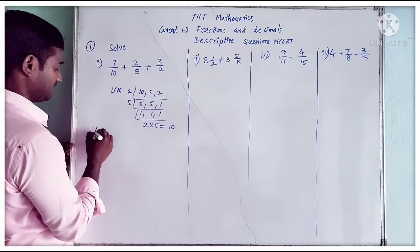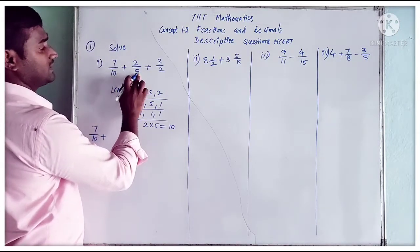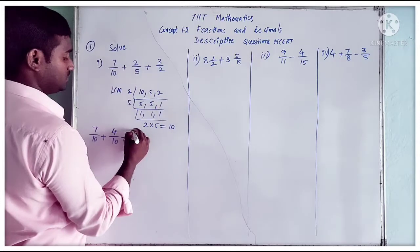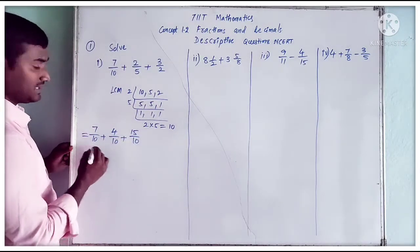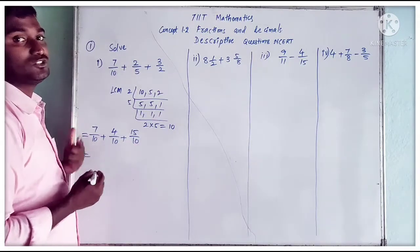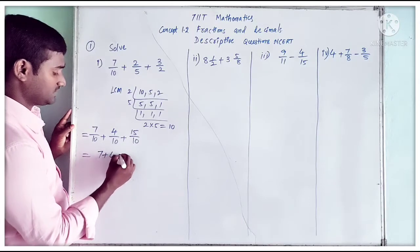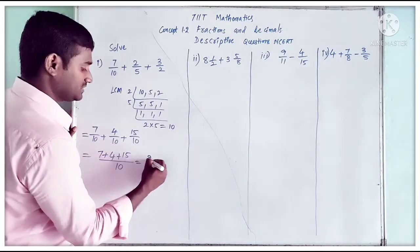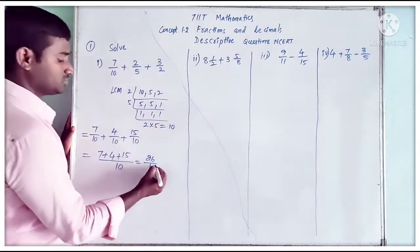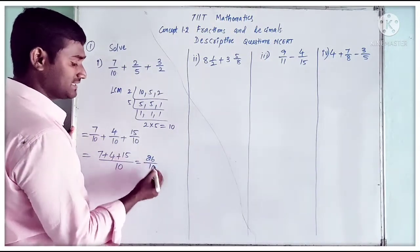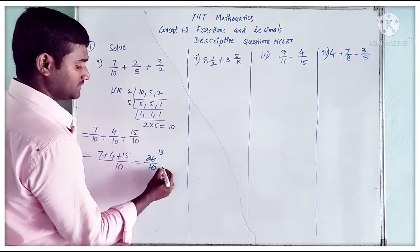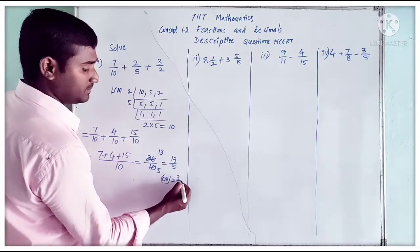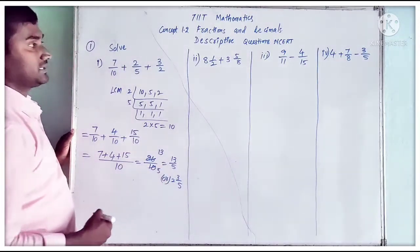The denominator we already have is 10. So 7 by 10 plus — to get 10, we multiply 2 by 2 to get 4 by 10, plus 3 by 2 multiplied by 5 to get 15 by 10. Now we have the same denominator. So we add the numerators: 7 plus 4 plus 15 by 10, which is 26 by 10. Cancelling by 2 gives us 13 by 5, or in mixed fraction, 2 and 3 by 5. Both are correct.